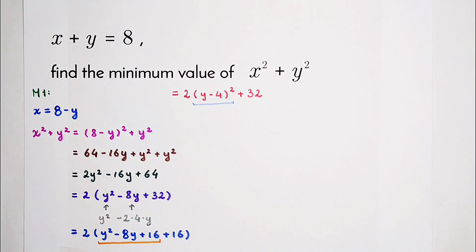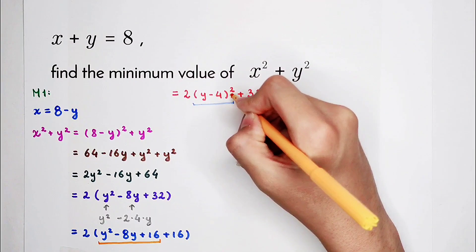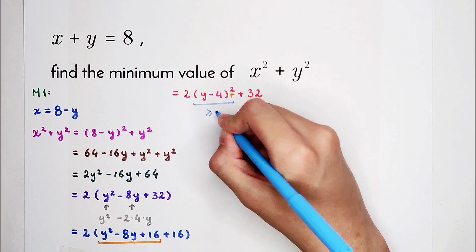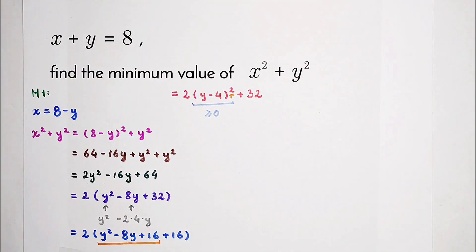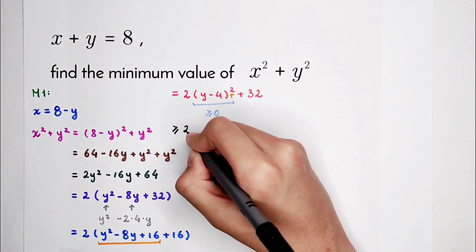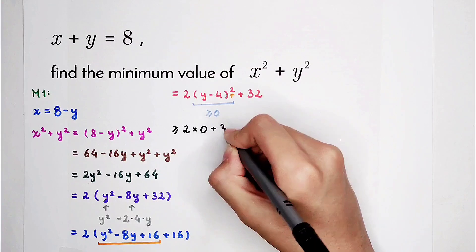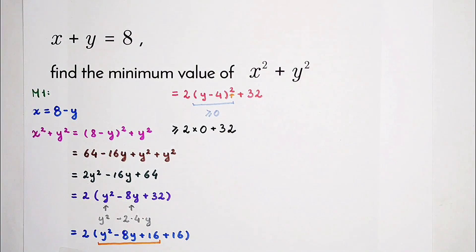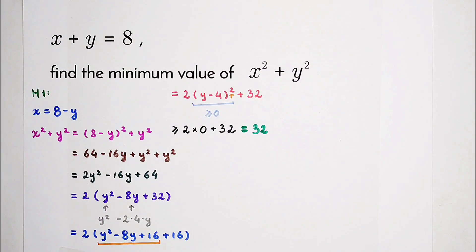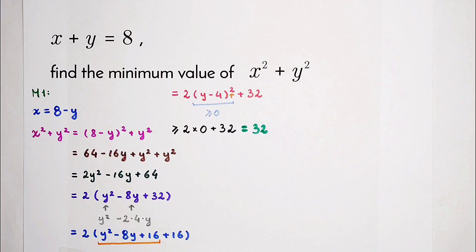Y minus 4 all squared - the base is not important. The importance is the exponent 2. It is a square term. A square term is always non-negative. This is a very, very important point. So then what should we do? Of course, we can get the answer. It is always greater than or equal to 2 times 0 plus 32. So the minimum value is 32. Now stop! This is only the first method. I have the second method as well.